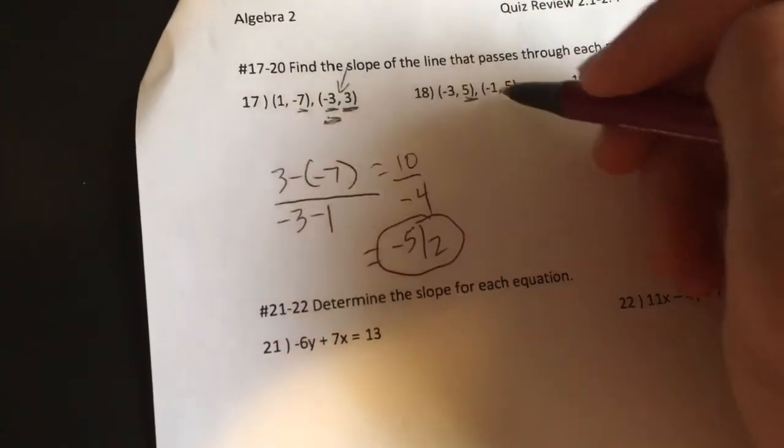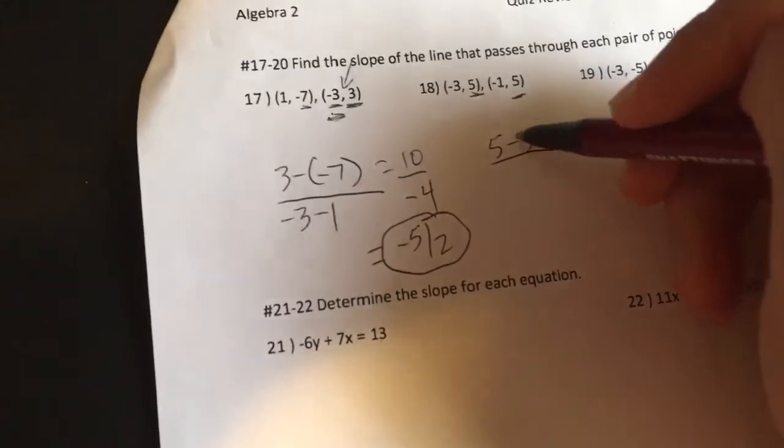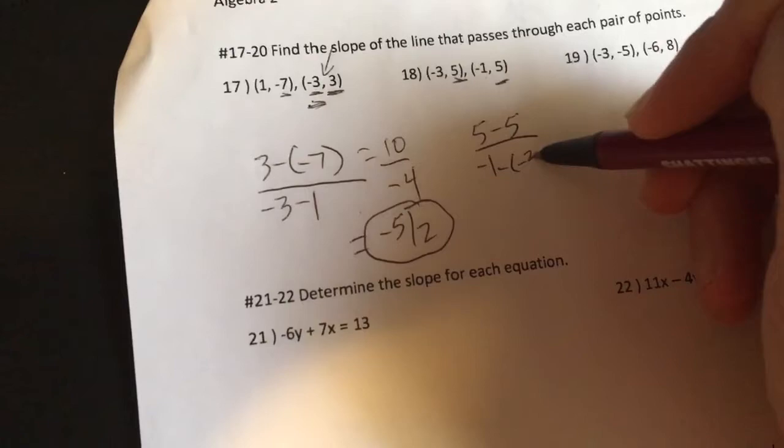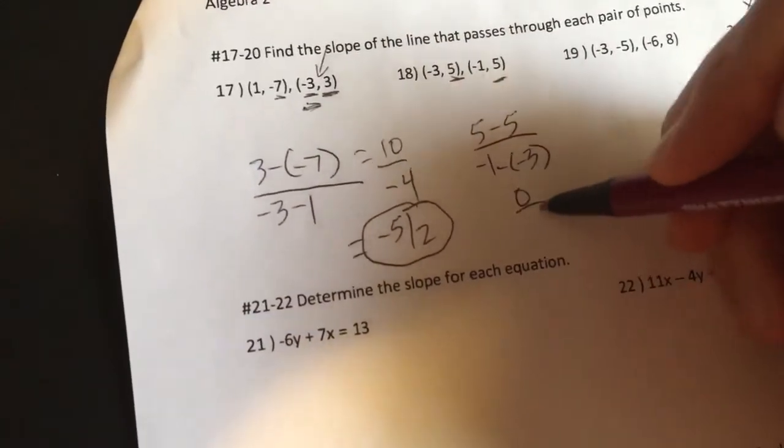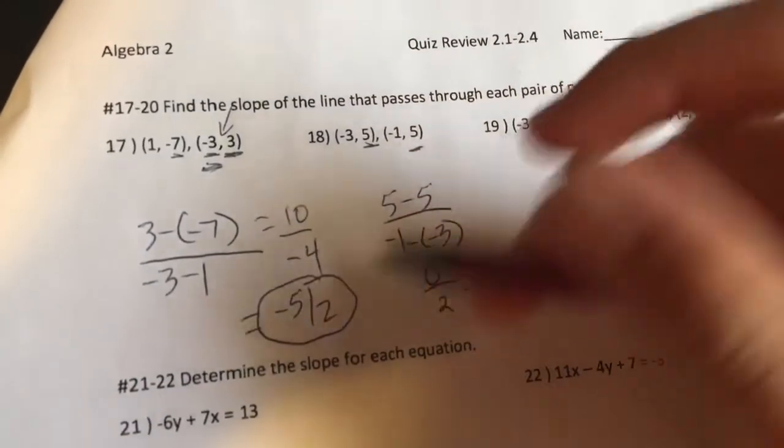All right. It doesn't matter which one I do here because my slope is going to be 5 minus 5 over. I'll just say here, negative 1 minus a negative 3. You get one of your special answers. You get 0 over 2, which is just 0. I like those type of slopes or a negative 1.